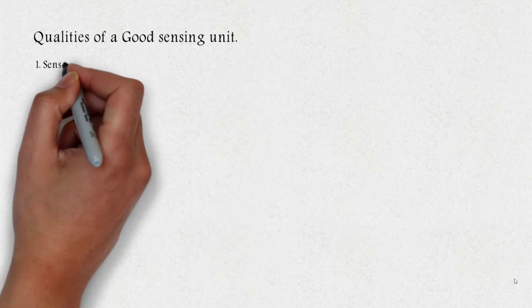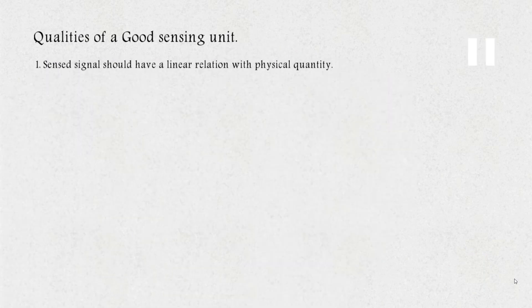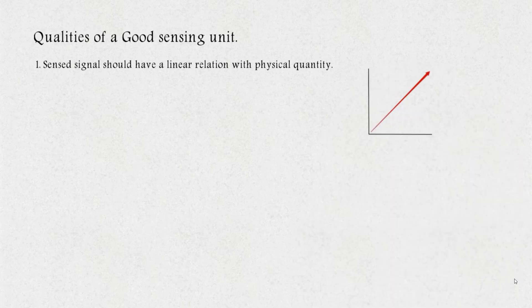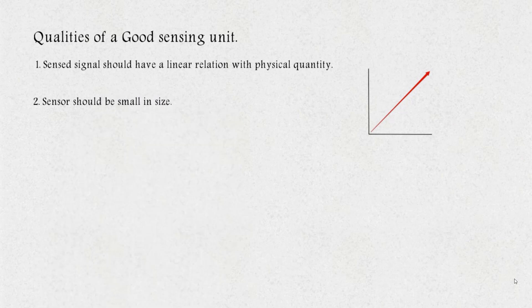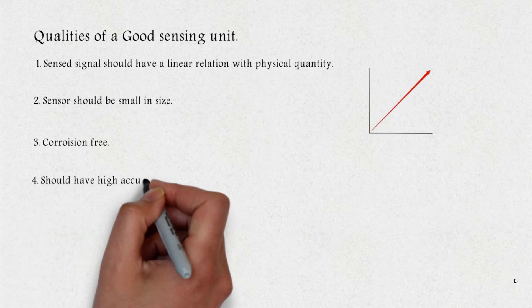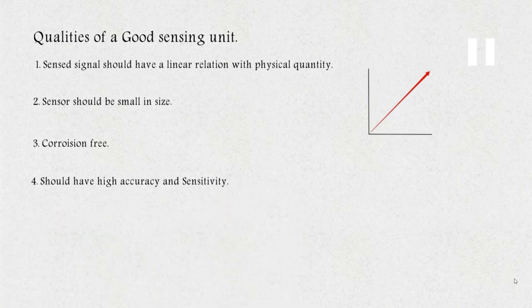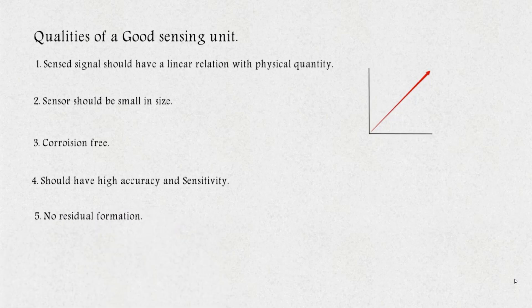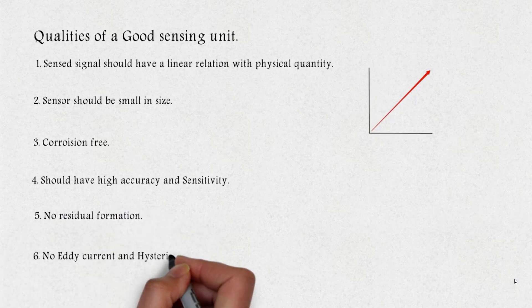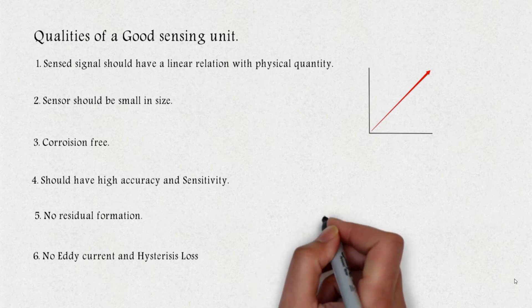Sensed signal from the sensing unit should have a linear relation with the physical quantity. Sensor should be small in size and free from corrosion. A sensor should have high accuracy and sensitivity. It should not allow any residual formation and it must have no eddy current and hysteresis loss.